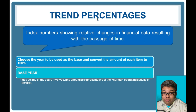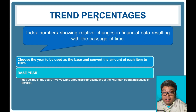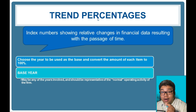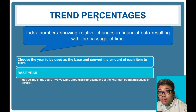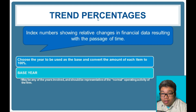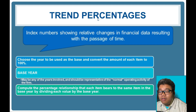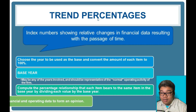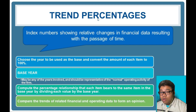The base year can be any year involved in the analysis, as long as it represents the normal operating activity of the firm. You cannot use the first year of operations if it is not yet regular, and you cannot use a year with extraordinary activities. Essentially, the base year is the denominator for all balances, and from that we see the trend and analyze.